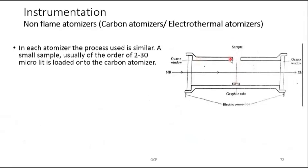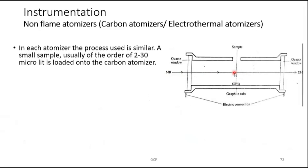Looking at the cross-section of the cylinder: at each end there are quartz windows so that electromagnetic radiation (EMR) can pass through. The graphite tube cylinder is connected to electrical contacts. When electricity passes through it, the graphite heats up, transferring heat to the sample solution, ultimately converting it into atoms.